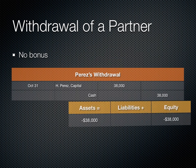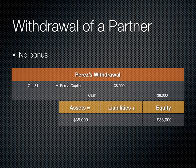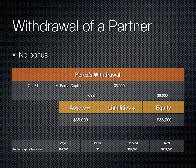The easiest way is for Perez to sell his interest to one or both of the partners — we simply debit the withdrawing partner's capital account and credit the existing partner's capital account. Another option is to pay Perez cash or other assets equal to the amount of his investment in the business. If there's no bonus and we're simply paying Perez cash to leave, we debit Perez's capital account and credit cash. On the balance sheet, we see a deduction in assets and a deduction in equity.